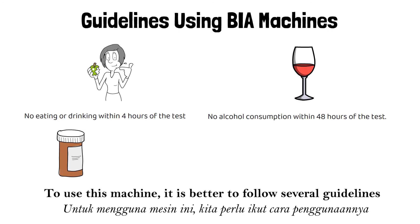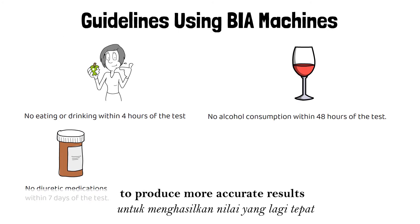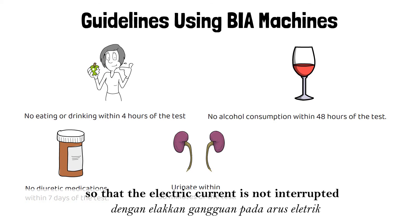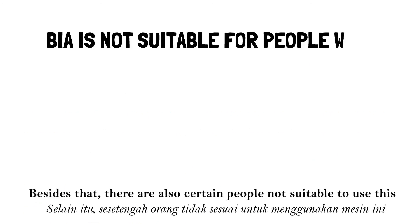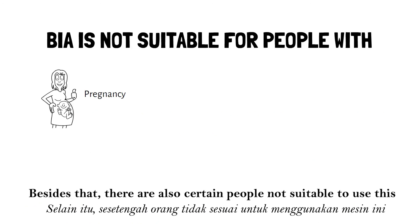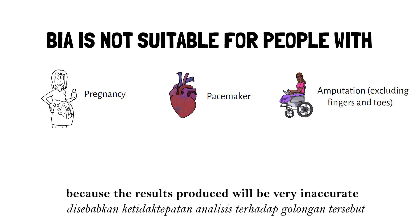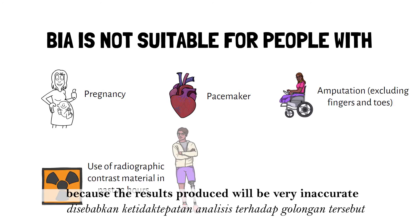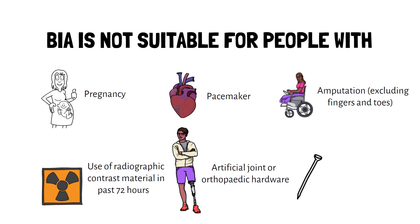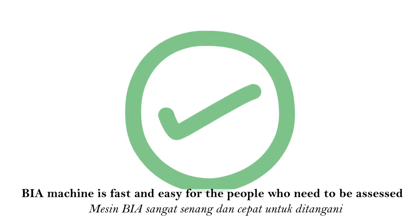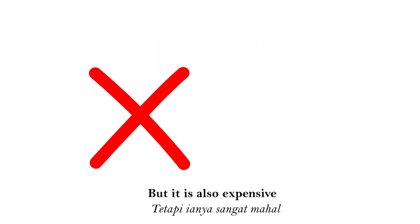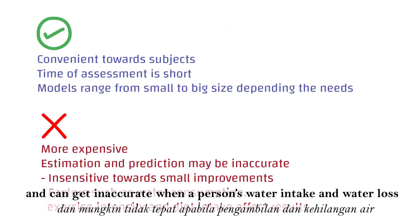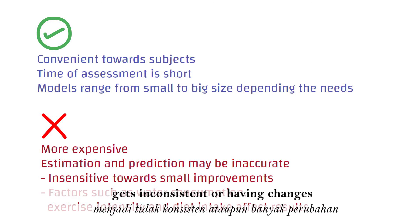To use this machine, it is better to follow several guidelines to produce more accurate results so that the electric current is not interrupted. There are also certain people not suitable to use this machine, because the results produced will be very inaccurate. BIA machine is fast and easy for the people who need to be assessed, but it is also expensive and can give inaccurate results when a person's water intake and water loss become inconsistent.